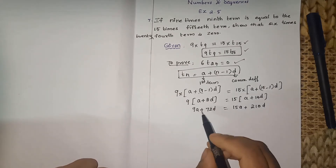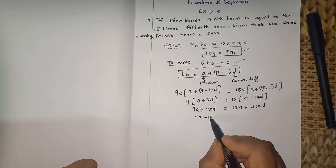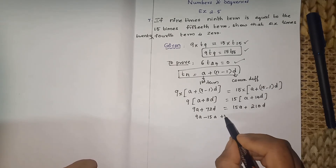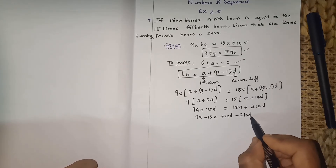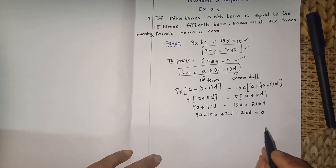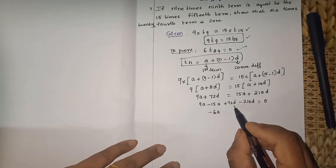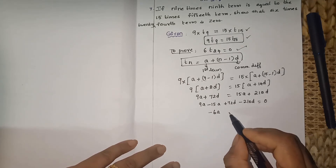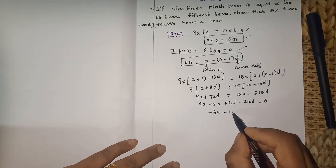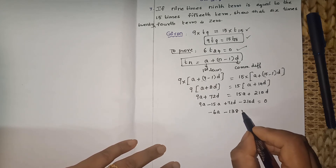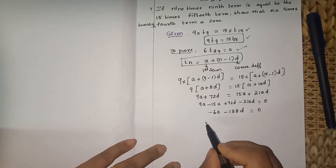Now bring all like terms to one side. 9a minus 15a plus 72d minus 210d equals 0. So 9a minus 15a is minus 6a, and 72d minus 210d is minus 138d, giving minus 6a minus 138d equals 0.